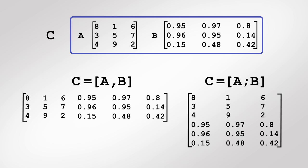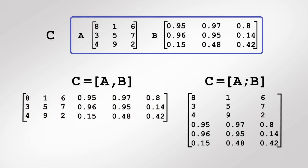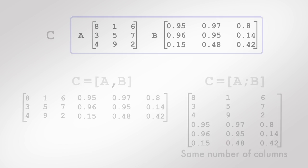Note that if we want to horizontally concatenate one or more arrays, all the arrays should have the same number of rows. Similarly, if we want to concatenate arrays vertically, all the arrays should have the same number of columns.